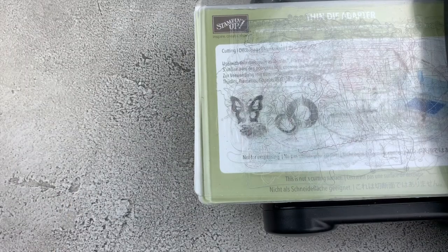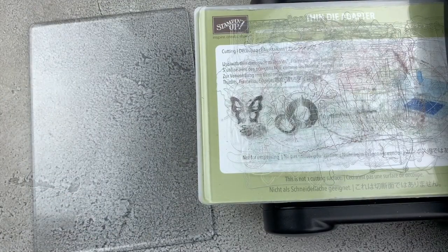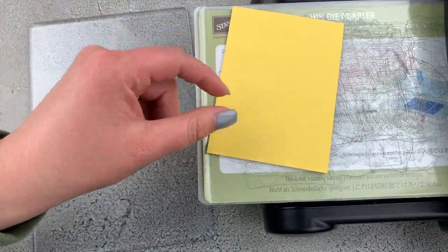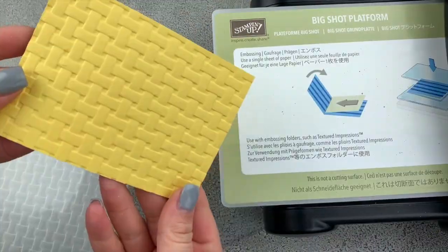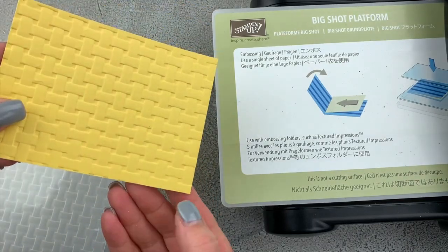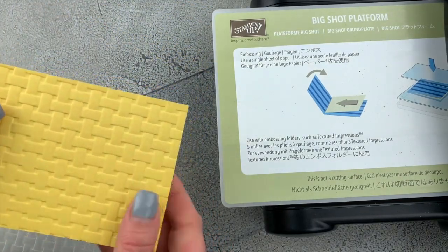I brought in my die cutting and embossing machine. I'm going to emboss my piece of Daffodil Delight cardstock with the Basket Weave 3D embossing folder. That's a really cool embossing folder. I love the detail and it's such a deep impression.